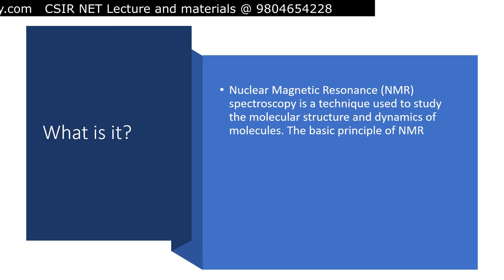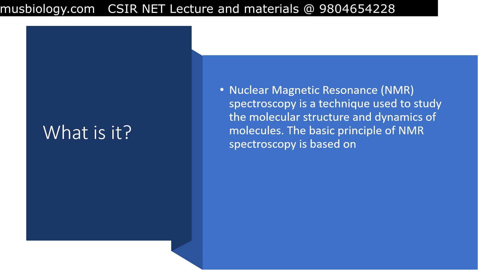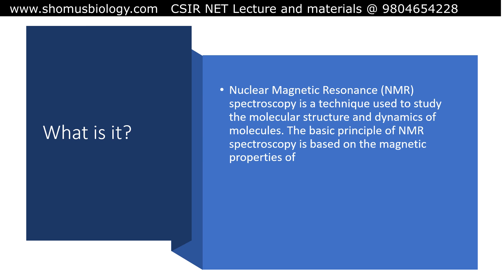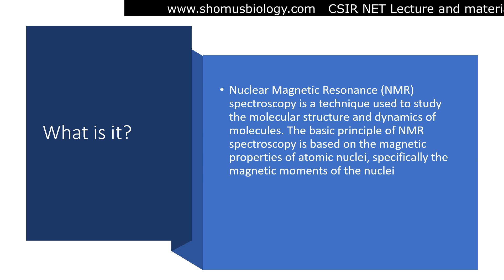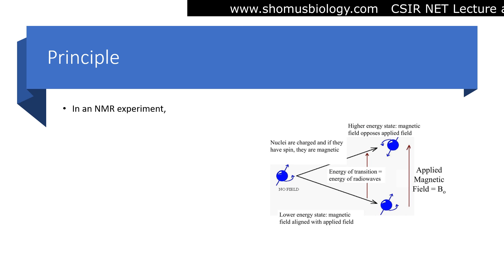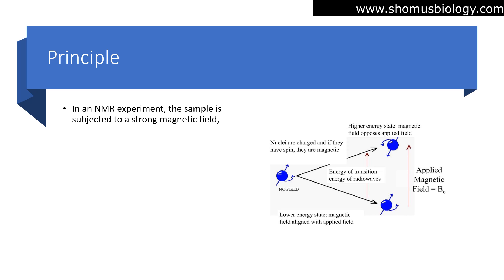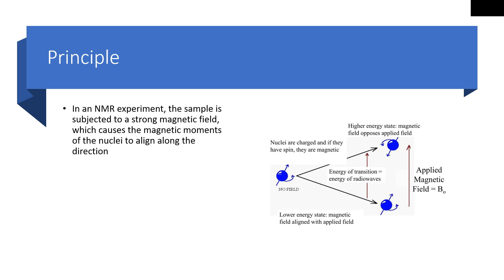The basic principle of NMR spectroscopy is based on the magnetic properties of atomic nuclei, specifically the magnetic moments of the nuclei. In an NMR experiment, the sample is subjected to a strong magnetic field which causes the magnetic moments of the nuclei to align along the direction of the magnetic field.